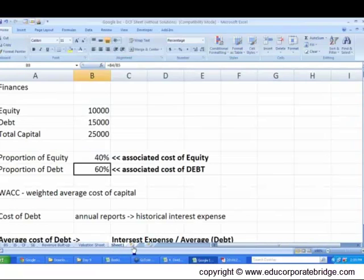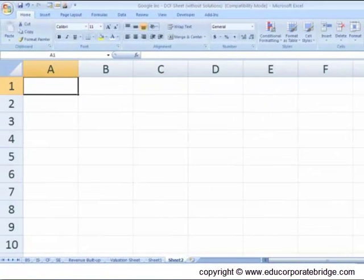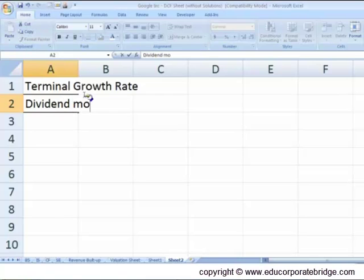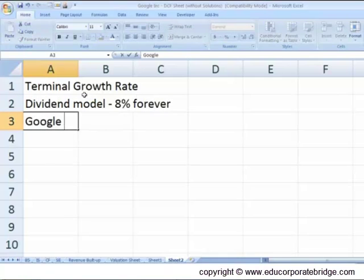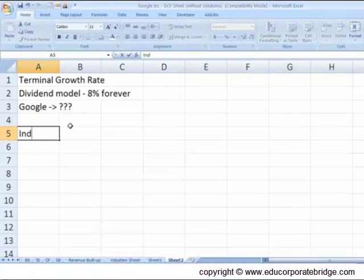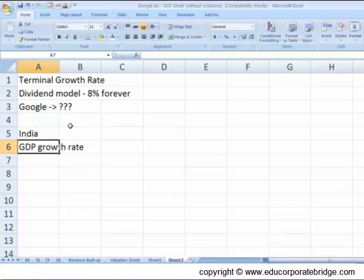I'll open another Excel sheet. Our discussion here is terminal growth rate discussion, which draws parallel from the dividend discount model. In the dividend discount model, we said that the terminal growth rate was 8% forever. So in case of Google, the question is, how much will this be? Now, say for example, if we take India as an example, what is the GDP growth rate in India? India, the GDP growth rate in India is almost around 8, 8.5%. We can fairly take this as 8%.